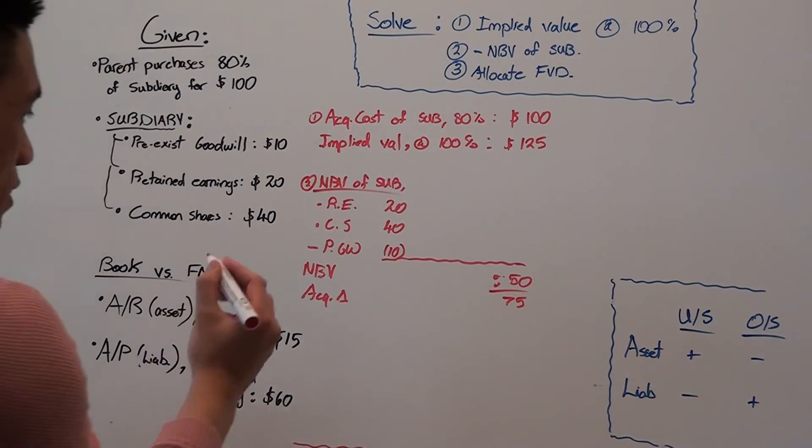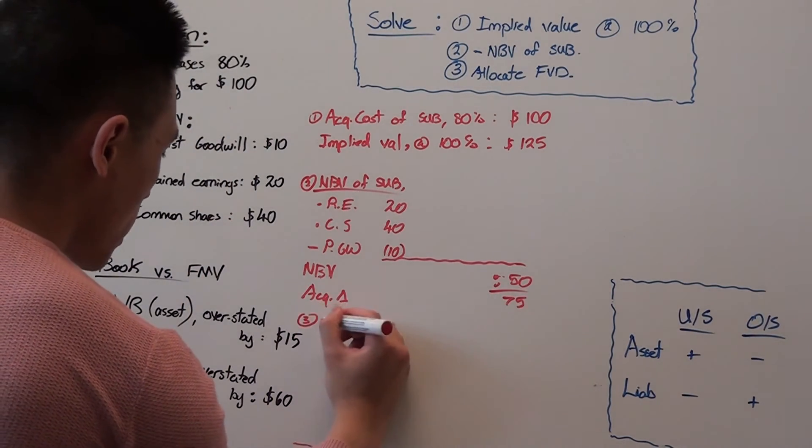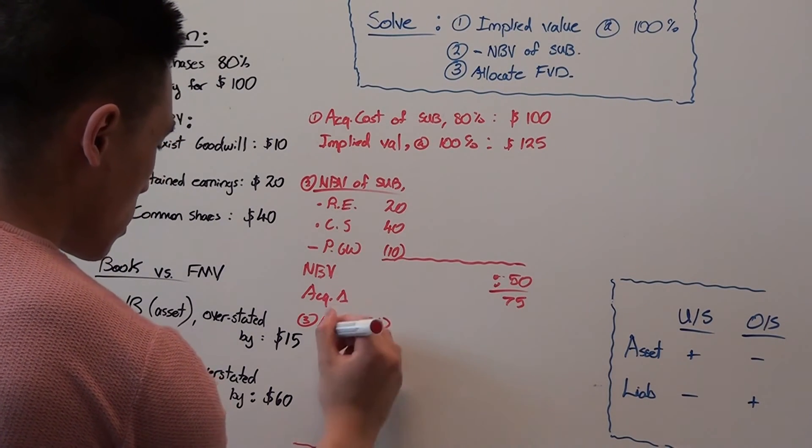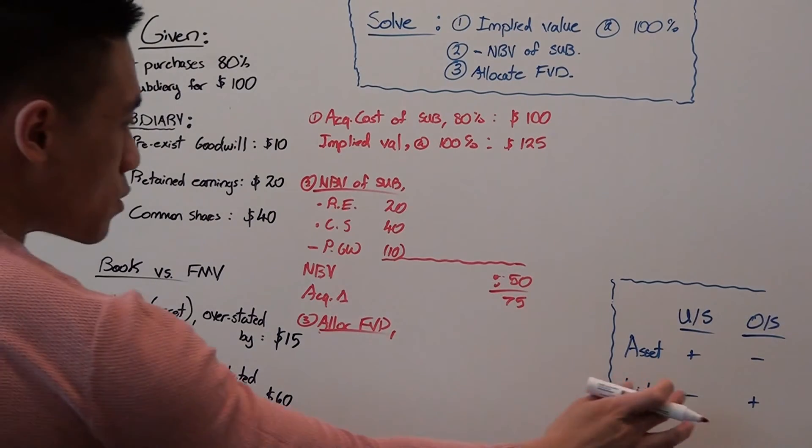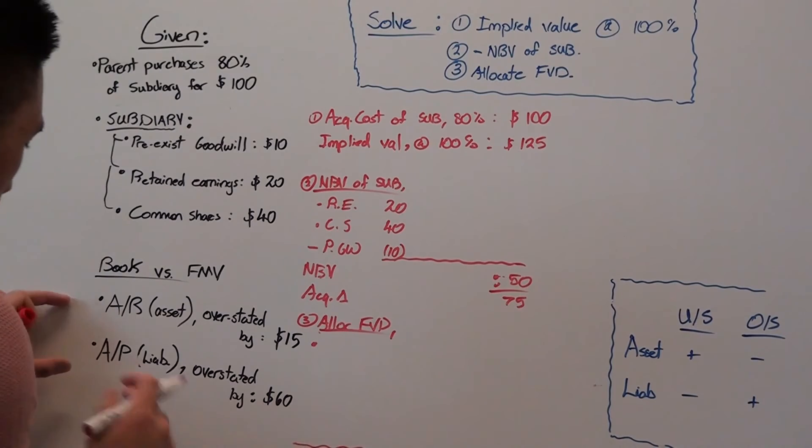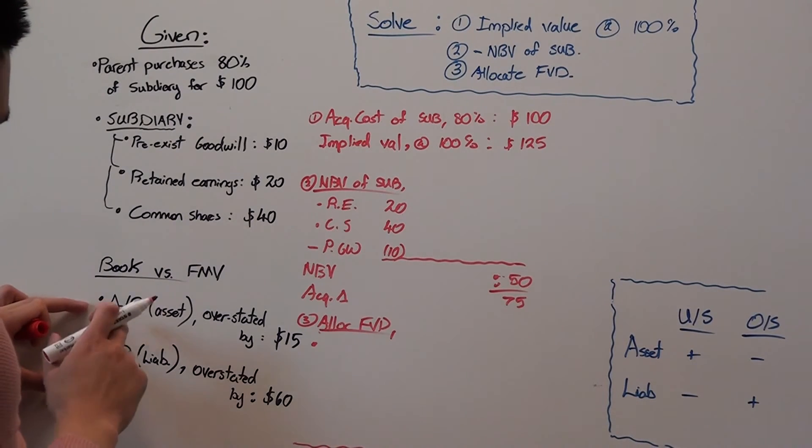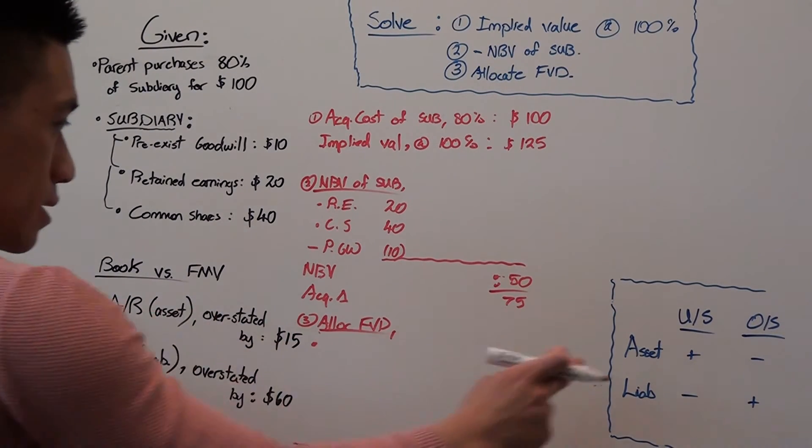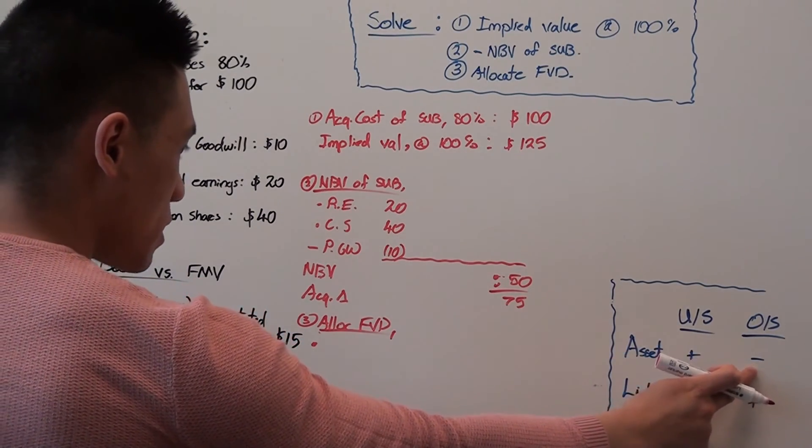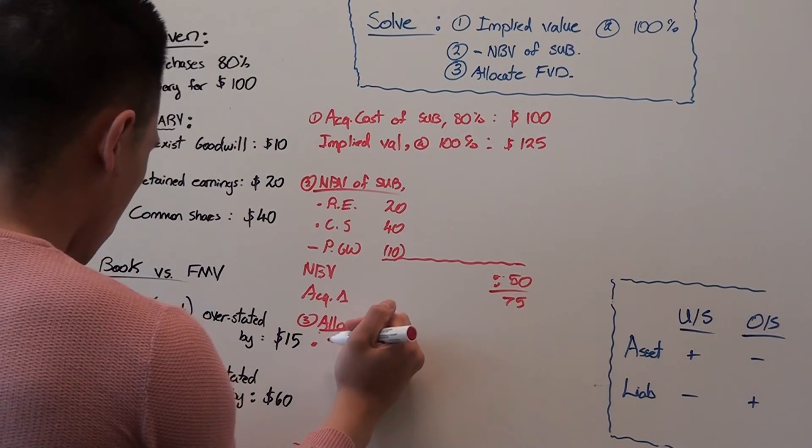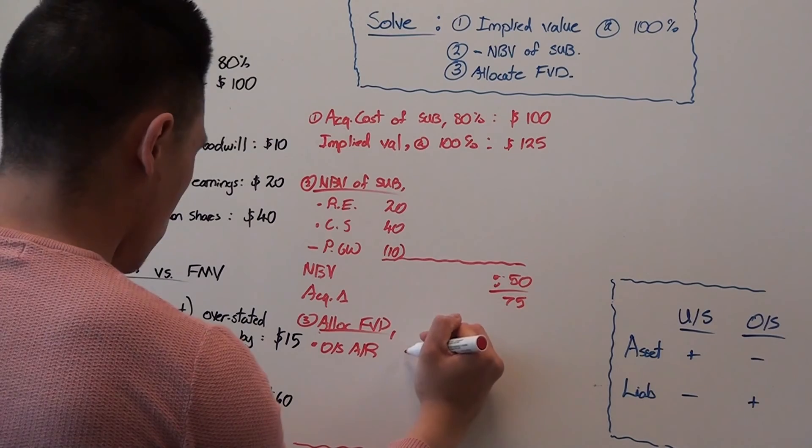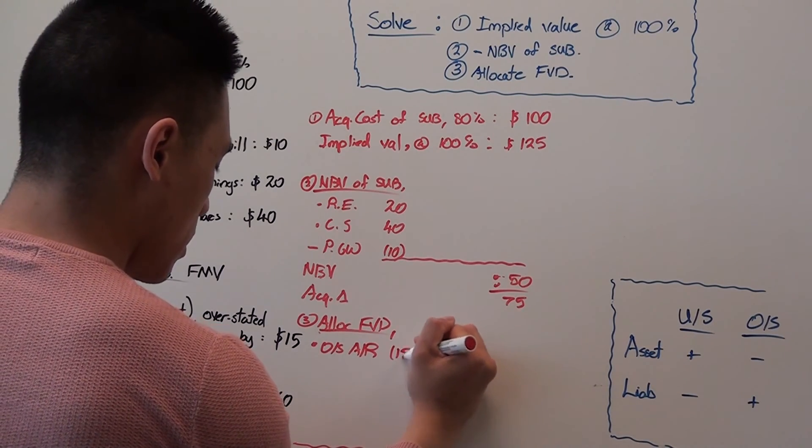And then third phase is to allocate your fair value differences. And we can use this cheat table to quickly identify what signs to put to which account. So for accounts receivable, the asset was overstated by $15. Therefore, it's a negative sign. Overstated accounts receivable, negative 15.